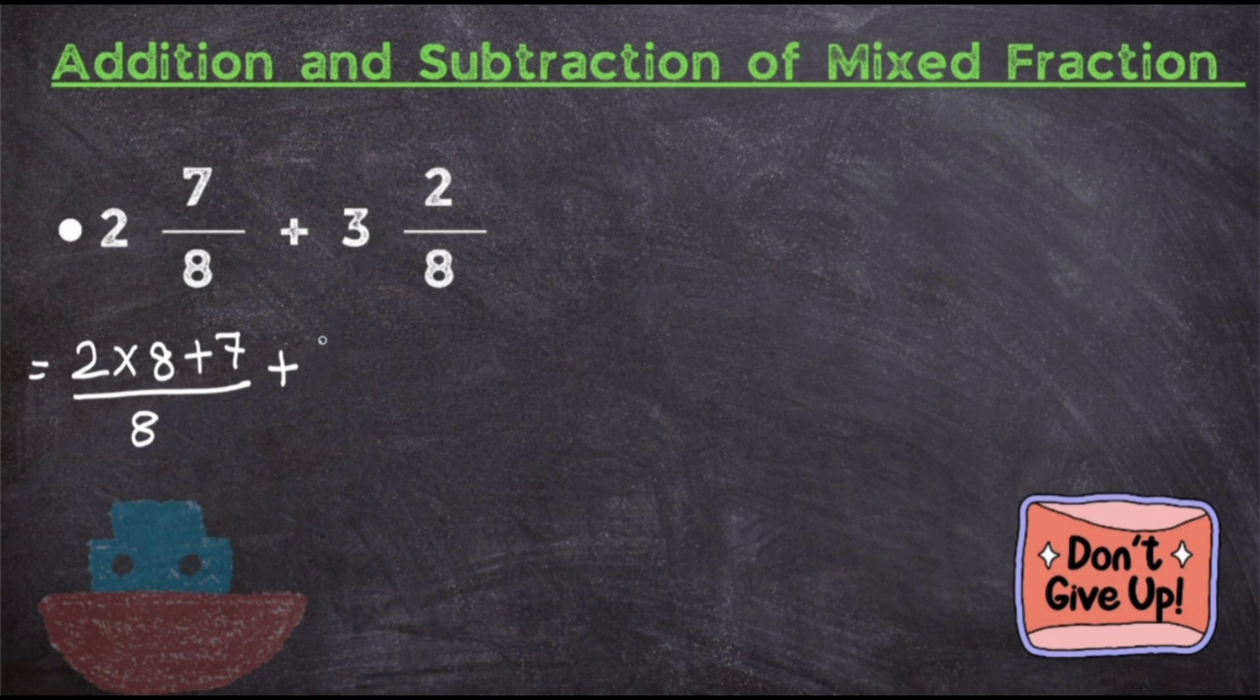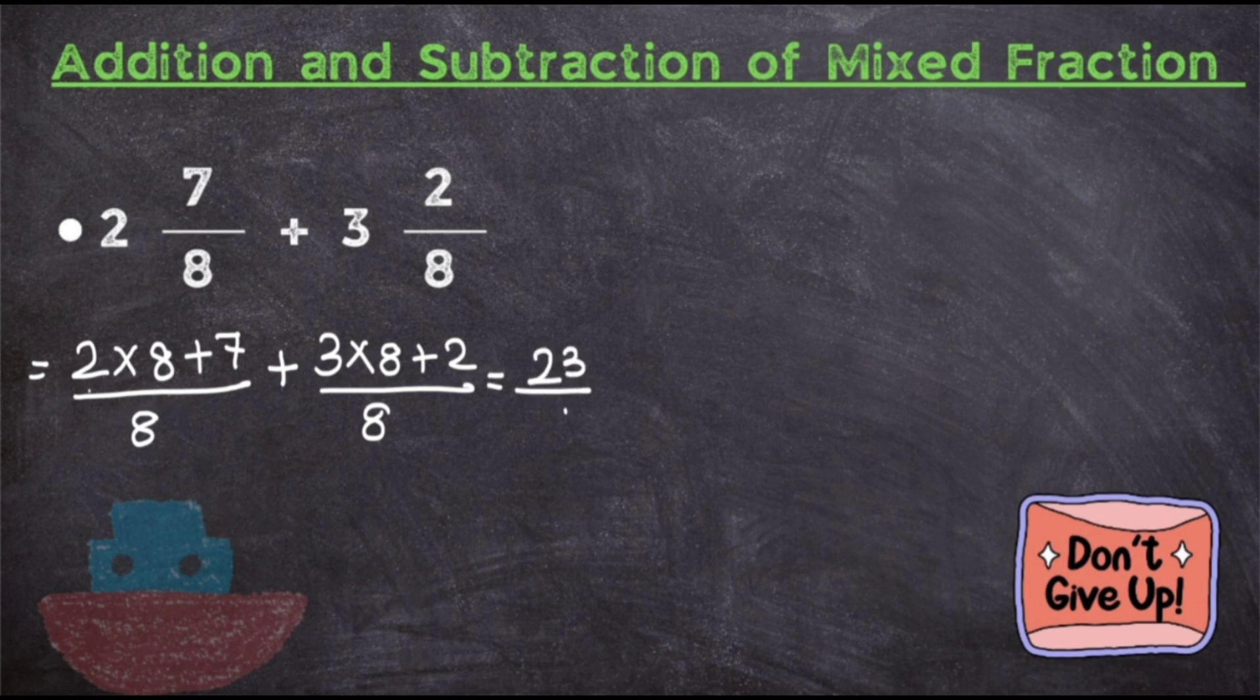First, solve the first fraction: 2 times 8 is 16, 16 plus 7 equals 23 upon 8. Plus, 3 times 8 is 24, 24 plus 2 equals 26 upon 8.